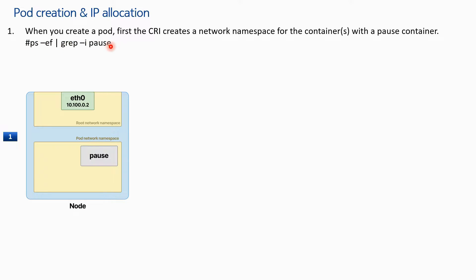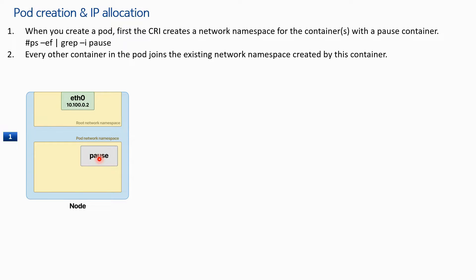If we want to see how many pause containers are running, we can check with this command on a node: ps -ef | grep pause. So as soon as a pod has been created — for example, if this is a node — a pause container will be created first. This pause container actually creates the network namespace for that pod. The root network namespace is the physical network part, the node networking part, and the pod network namespace is the pod networking part. Before creating the pod, the CRI creates the network namespace, and to do that a pause container has to be created. Then every other container in the pod joins the existing network namespace created by this pause container.